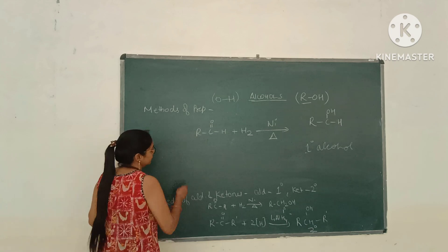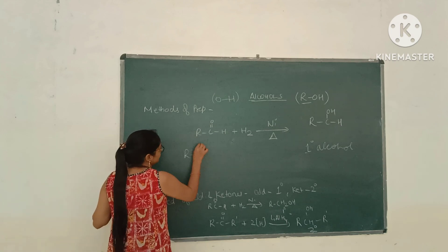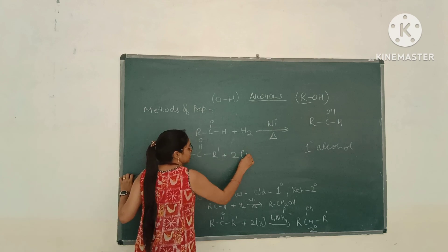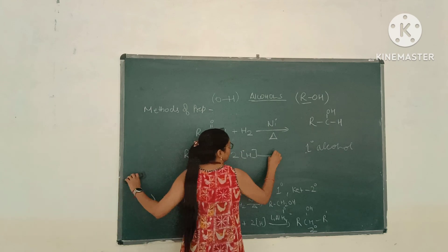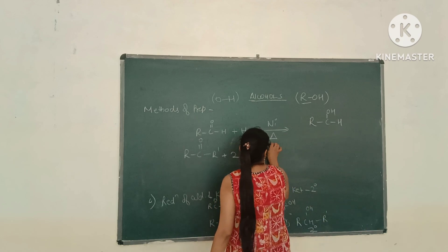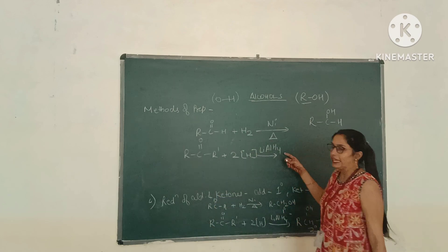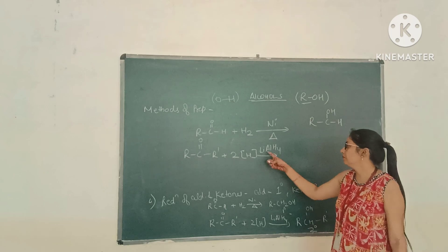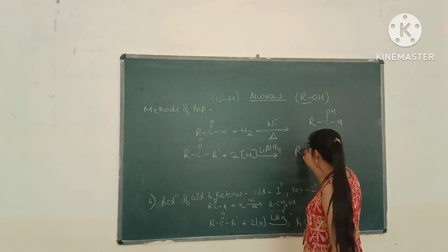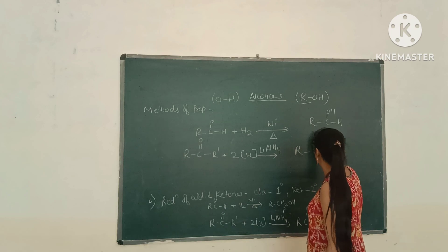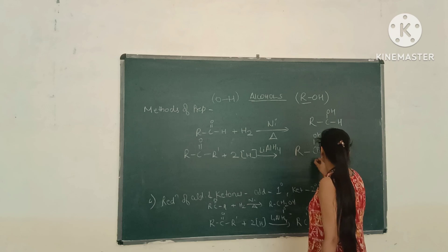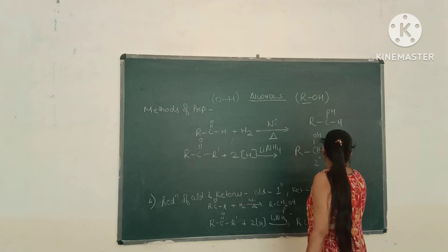In the second case, if we use a ketone RCOR' plus 2H, this reaction takes place in the presence of lithium aluminum hydride (LiAlH₄), and we will get the secondary alcohol RCHOHR'. This is a secondary alcohol.